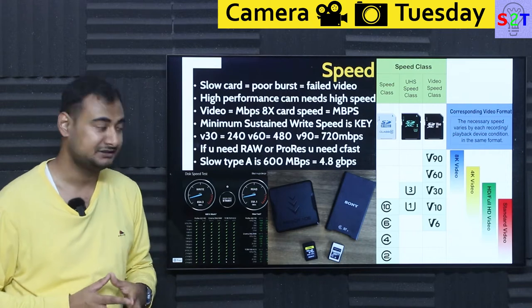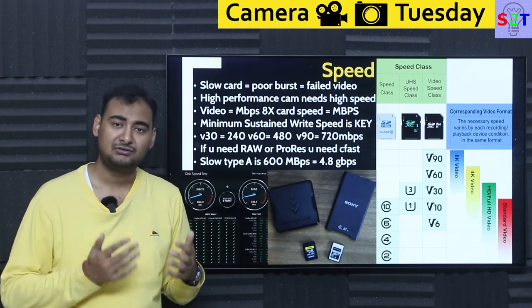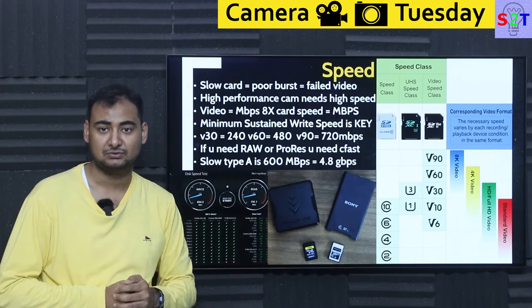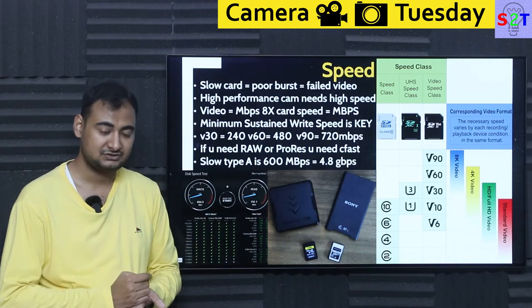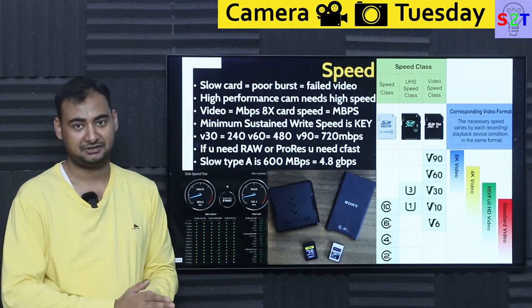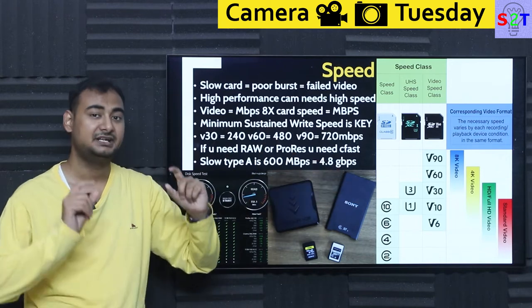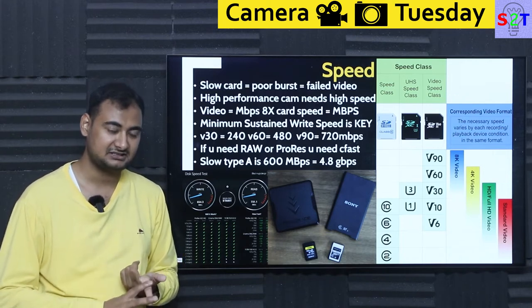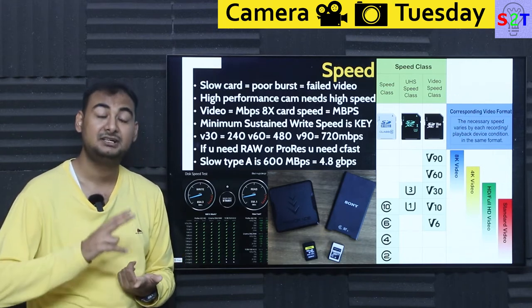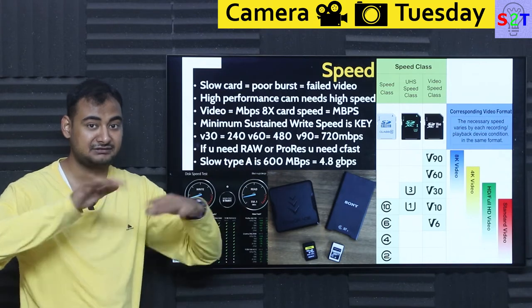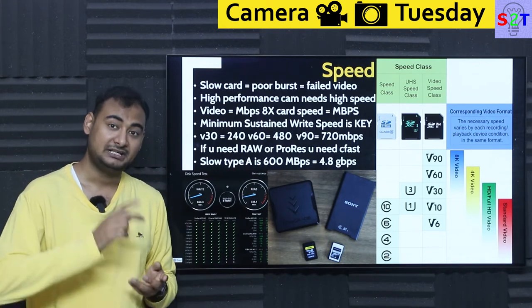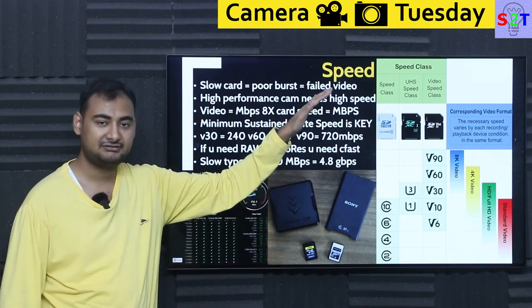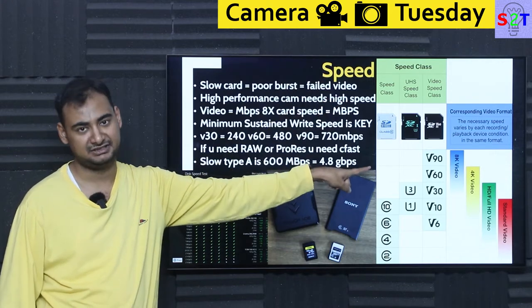The speed ratings you see on SD cards from the SD Association represent one core thing: minimum sustained write speed. Cards are often much faster in real-world read/write tests, but the rating guarantees a floor. For example, a V90 card means it can transmit 90 MBps no matter what — whether the camera is hot, at 70 degrees, or the card is nearly full with no room to shuffle files. It will still hit that speed.